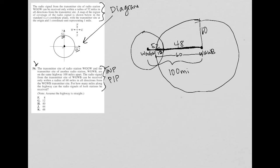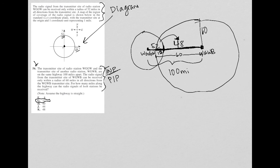The question asks: for how many miles along the highway can the radio signals of both stations be received? The answer is 12 — I already did the work. This happens quite often when you take time to understand and translate the question rather than rushing through it. By envisioning the two transmitter sites 100 miles apart, knowing the first radius is 52, I figured out the remaining distance was 48. Then, reading that WGWB's radius is 60, I understood that 12 miles of overlap is the answer.